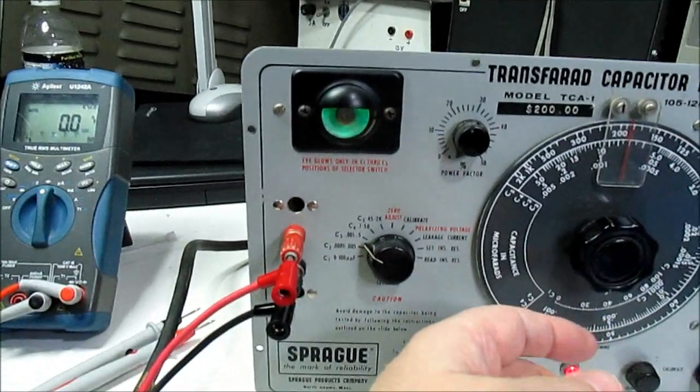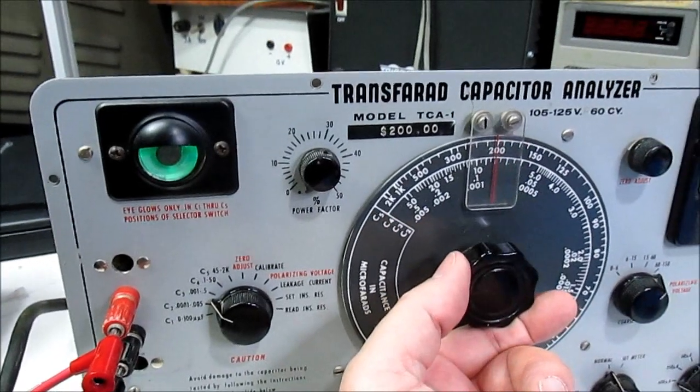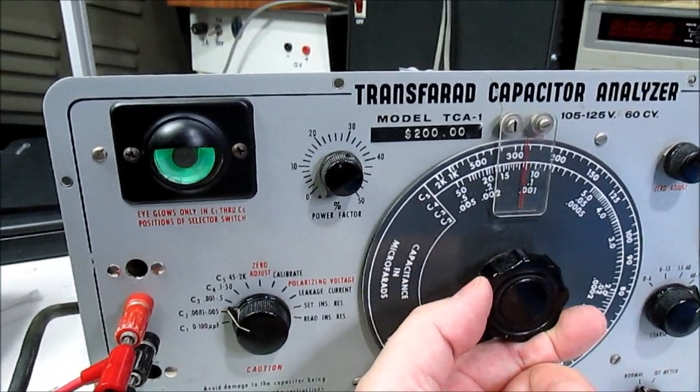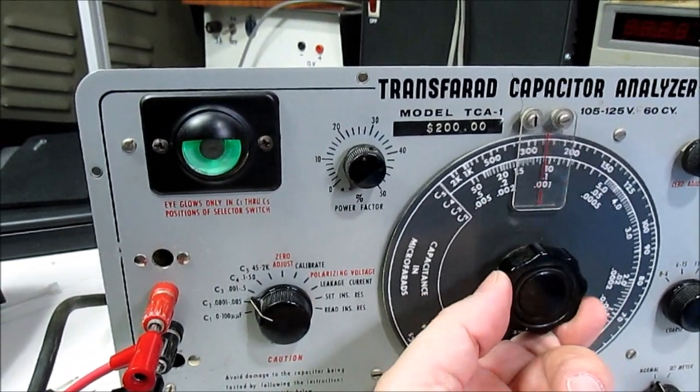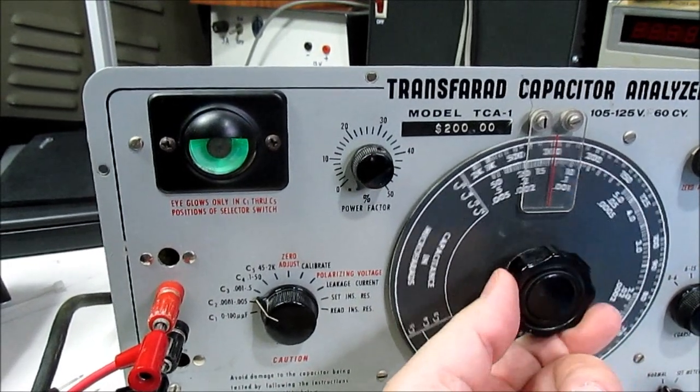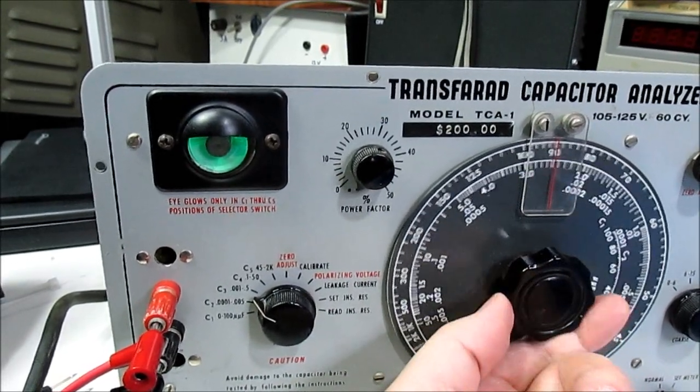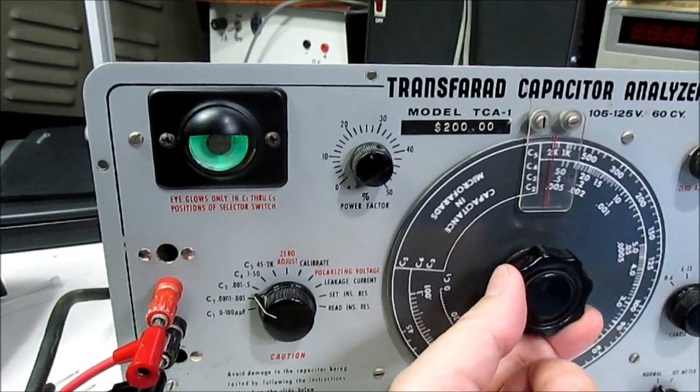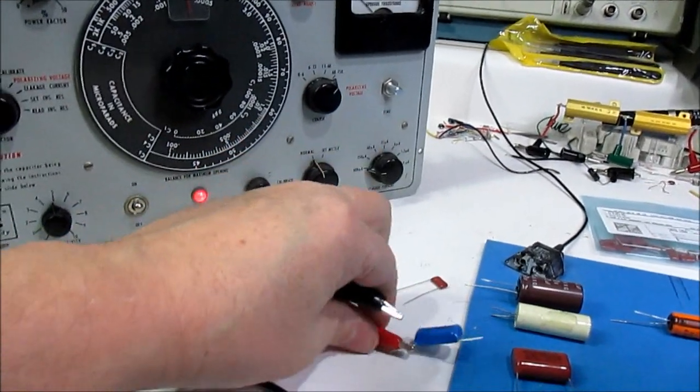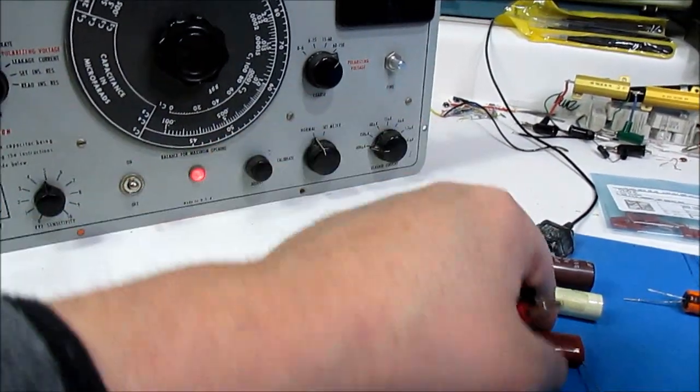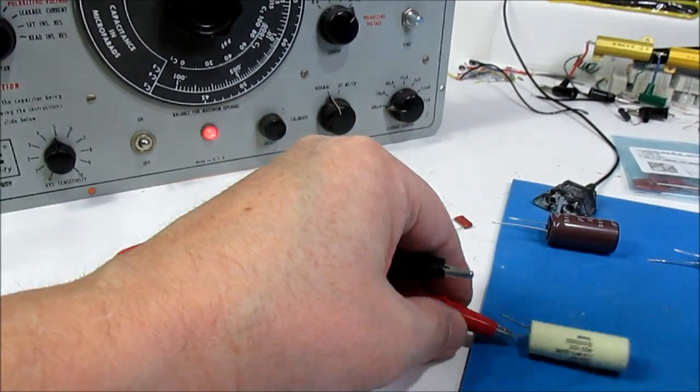This one is a .1. Let's put that one on. So a .1, can we still use that same scale? Yeah, I think we can. So a .1, if it was right on, would be right about there on this dial. And I'm not seeing anything here. Let's try a larger one. This one's a .47, I'm not sure that's worth it. This one's a 1.0 film capacitor.